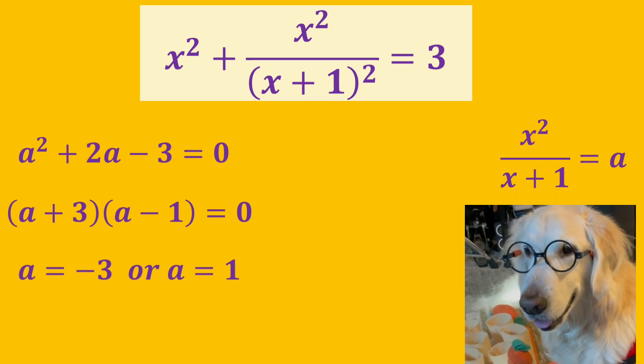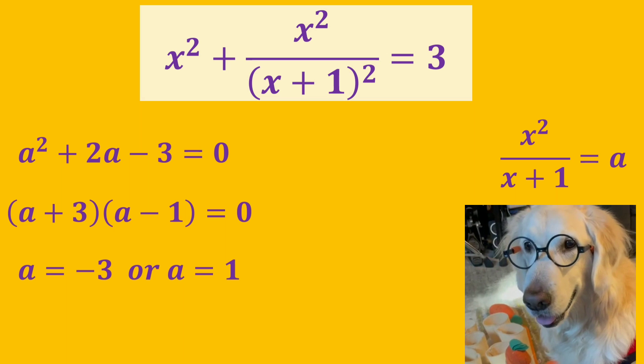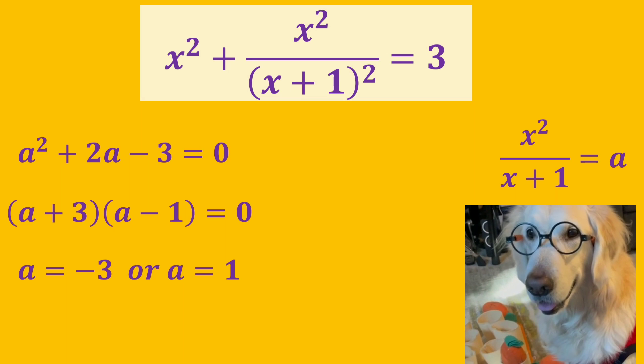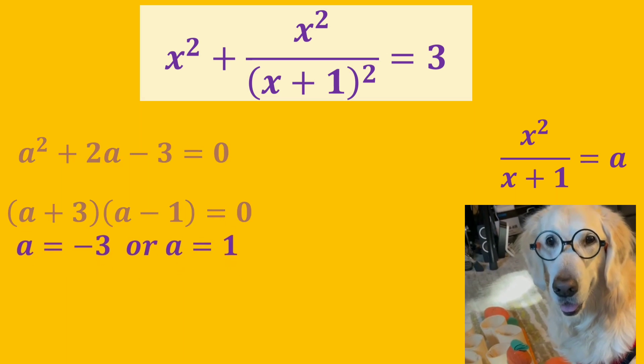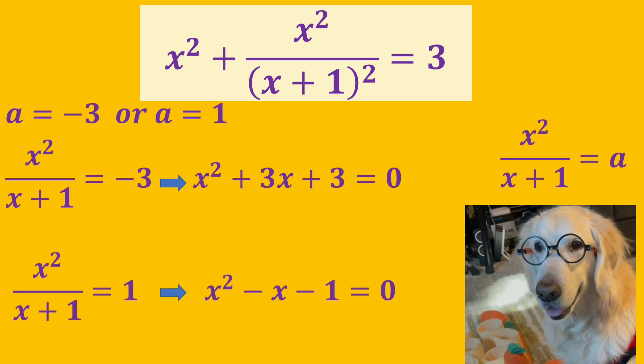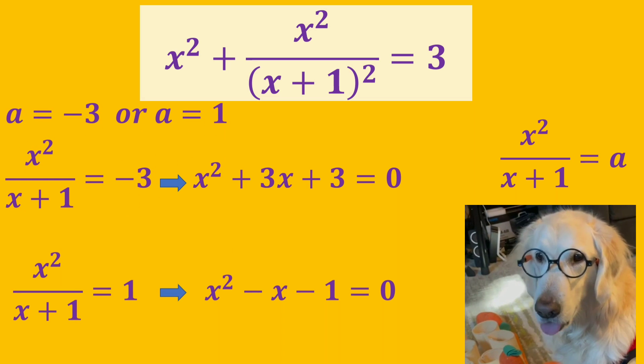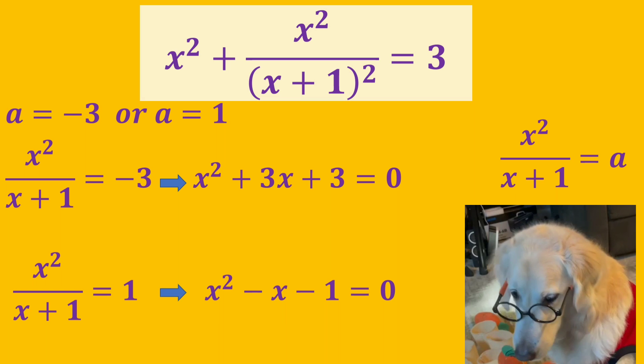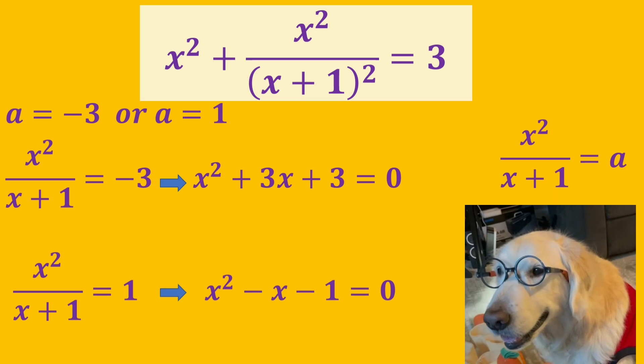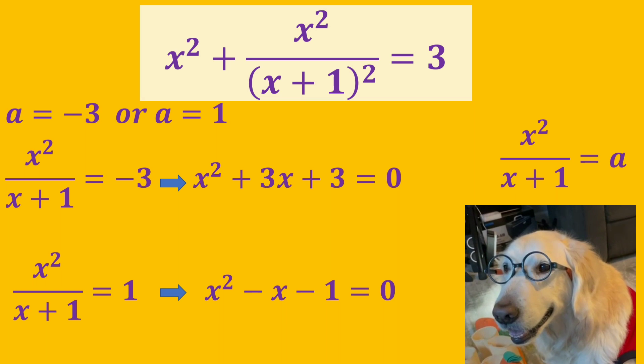The value of a is minus 3 or 1. We need to go back to use variable x instead of a. Now we have two quadratic equations in terms of x.